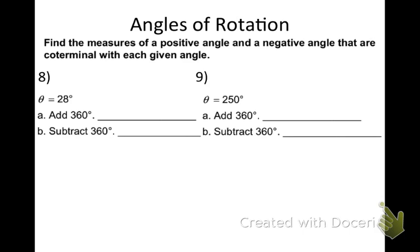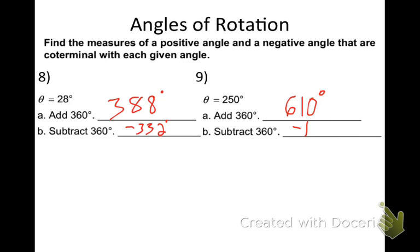Find the measures of a positive and a negative angle coterminal with each given angle. For 28 degrees: adding 360 gives 388, and subtracting 360 gives negative 332. For theta equals 250 degrees — theta is a Greek letter, used by fraternities and sororities too — adding 360 gives 610, and subtracting 360 gives negative 110 degrees.